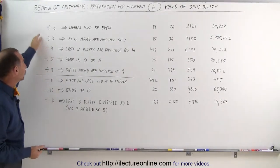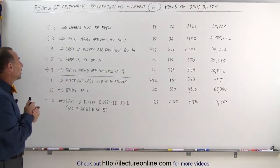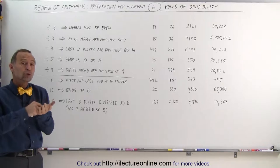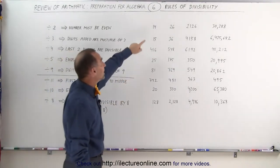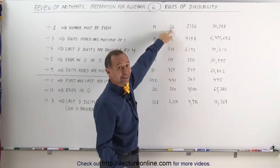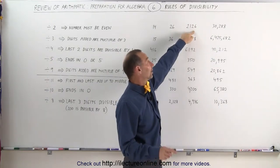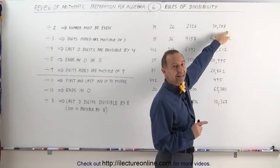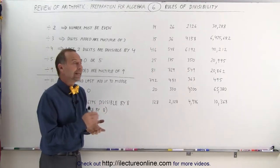How do we know a number is divisible by 2, by 3, by 4, by 5, by 9, and so forth? The rule for divisibility by 2 is that the number must be even. That means the last digit must either be a 0, 2, 4, 6, or 8. For example, 14 ends in a 4 — that's an even number, so it's divisible by 2. 26 ends in a 6, that's an even number, divisible by 2. 2,126 ends in a 6, divisible by 2. And 30,288 ends in an 8, so it's divisible by 2. Any number that ends in an even digit is divisible by 2.